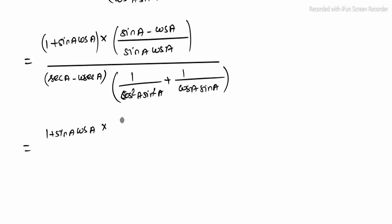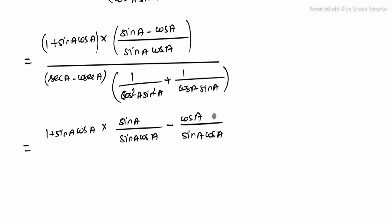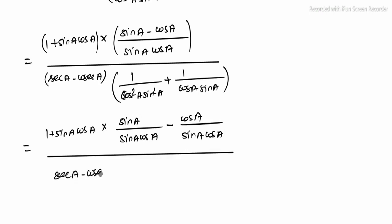Split the denominator terms: sin A over sin A · cos A minus cos A over sin A · cos A, which simplifies to 1 over cos A minus 1 over sin A, i.e. sec A minus cosec A.